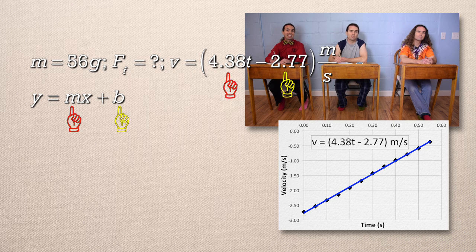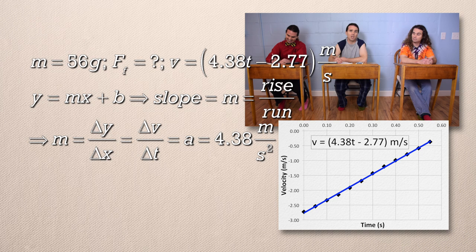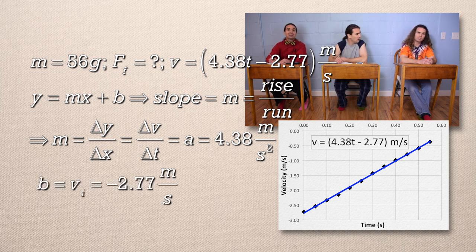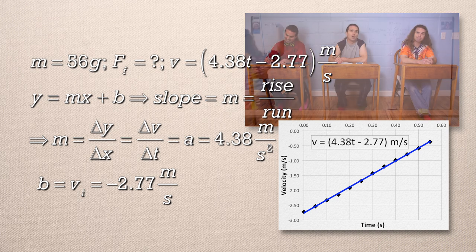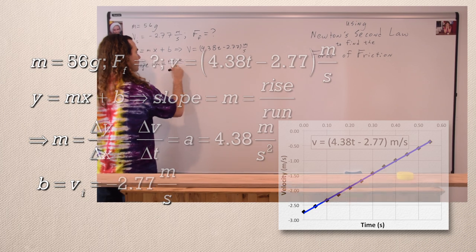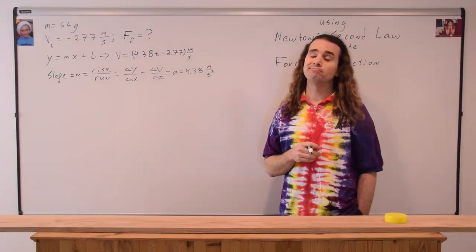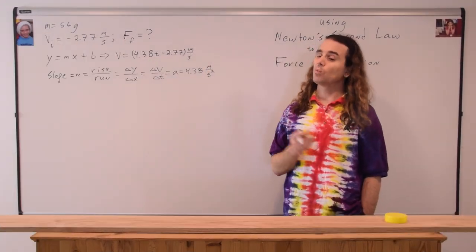The slope of a velocity versus time graph is acceleration. So the acceleration of the hockey puck is 4.38 meters per second squared, and the y-intercept is negative 2.77 meters per second, which is the initial velocity of the hockey puck. Very nice. Bo, what do we do next?